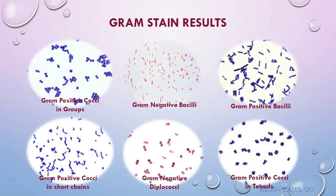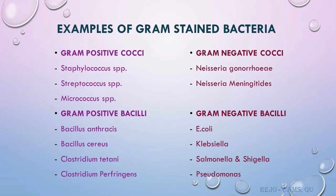Gram positive bacteria appear in purple color while gram negative organisms appear in pink. When examining a gram stain, first look at the color of the cells — purple or pink — then look at the shape, whether cocci, bacilli, or any other shape, then check the arrangements. In this gram stain picture you can see different arrangements: gram positive cocci in groups or clusters, gram positive cocci in chains and tetrads, gram negative bacilli in singles, and gram negative diplococci.